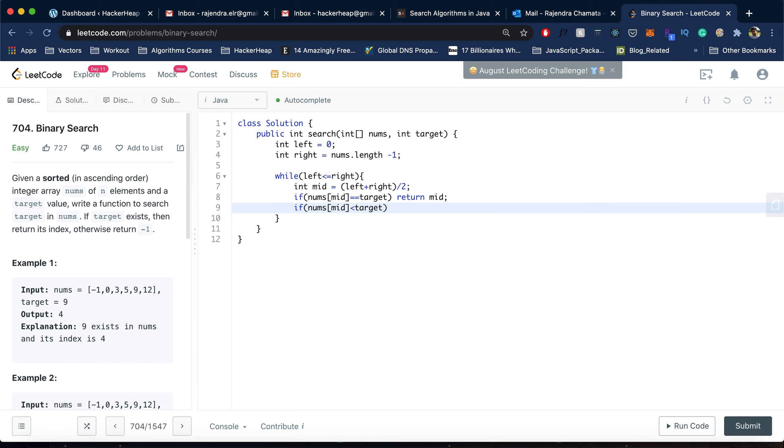what we do is left equals mid plus one. Else if nums[mid] greater than the target, we will move the right index to mid minus one. If we didn't find the given element, we would return minus one. Let's go ahead and run this. It got accepted.